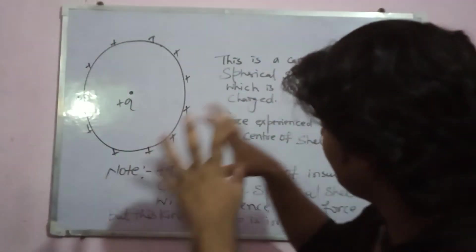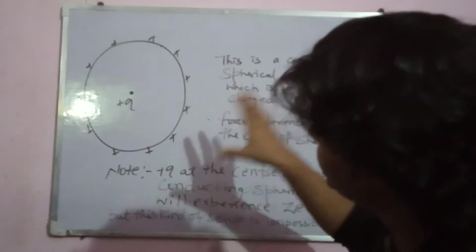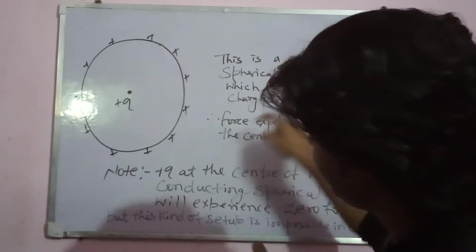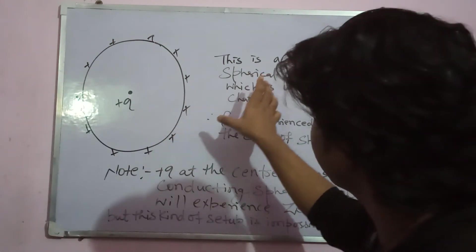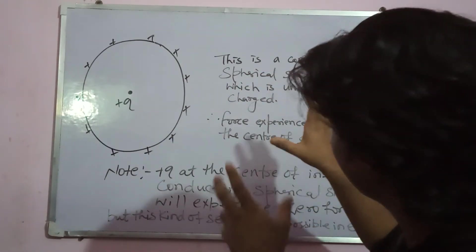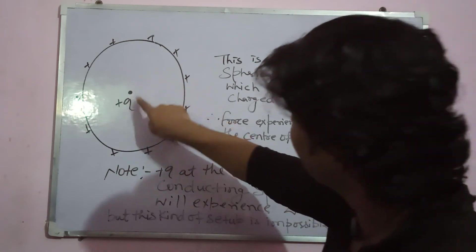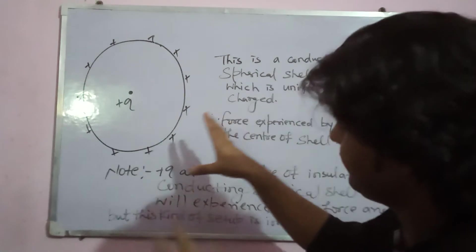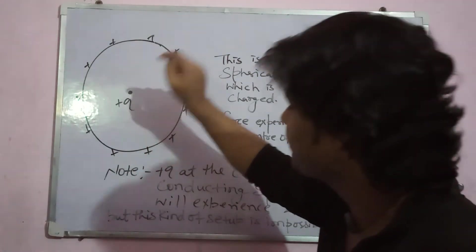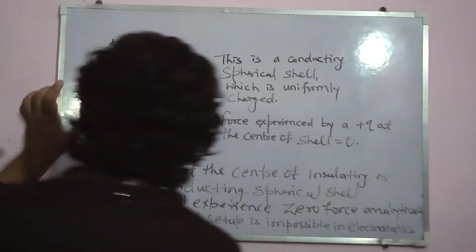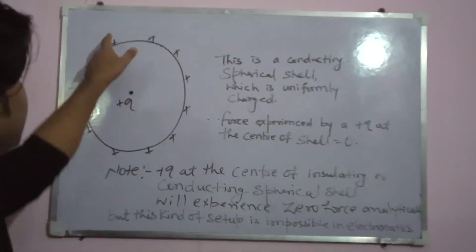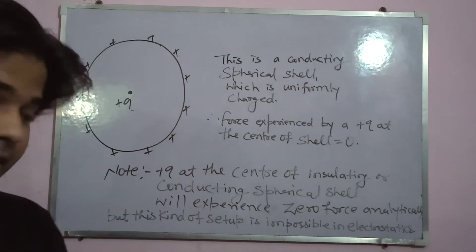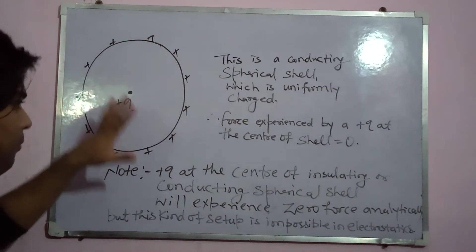This is also an analysis based on the continuous charge distribution. This time, I have taken a conducting spherical shell. Just before it, I have taken an insulating spherical shell and placed a point charge Q at its center. Analytically, it again experienced zero forces by making the same analysis what we have made with insulating spherical shell when they are uniformly charged.